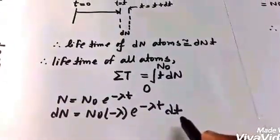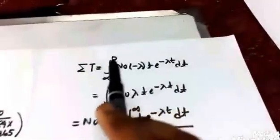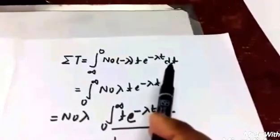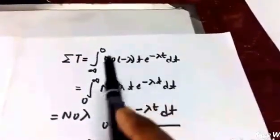Now our variable is t, so we have to change the limit.